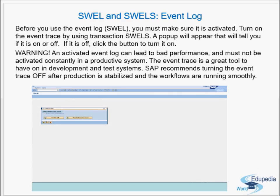The next important transactions are SWEL and SWELS — the event log transactions. SWELS is used to activate or deactivate the event trace, and SWEL displays the event log. Before using the event log, you must make sure it is activated using SWELS. When you execute SWELS, a pop-up appears telling you if the trace is on or off; click the button to toggle it.